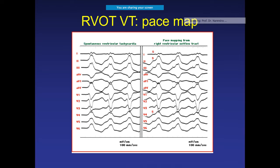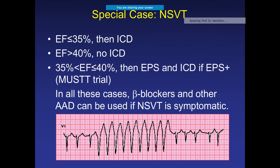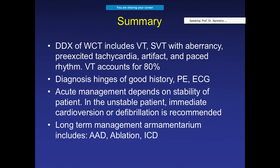ICD indications: if ejection fraction is less than 35%, ICD should be given. If EF is more than 40%, no ICD is indicated. If EF is between 35–40%, perform an EP study first, then consider ICD implantation. In all these patient groups, beta blockers and if possible an antiarrhythmic drug should be used.